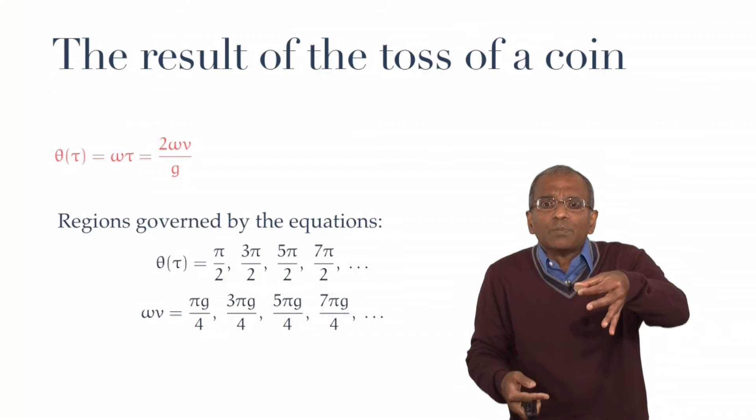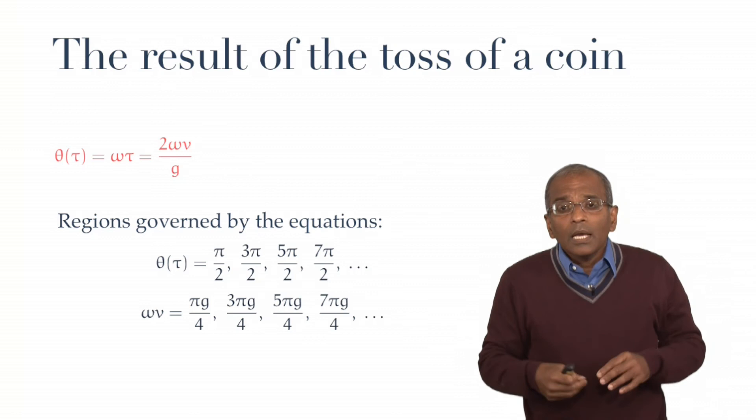Well, because if you have a very high velocity but the coin is barely spinning, it will come back and it will not have spun very much. And therefore, you will get a head.